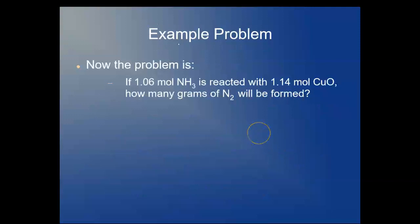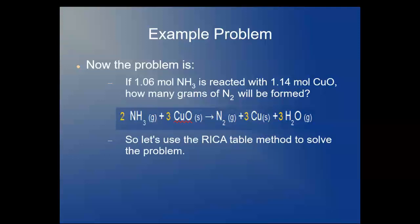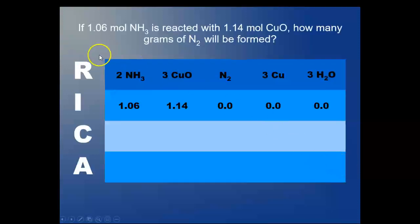Now the problem is a mole-mole problem. If you react 1.06 moles of ammonia with 1.14 of copper oxide, how many grams of nitrogen will be formed? So here's your balanced chemical equation, and let's use the RECA table method to solve the problem. Here's your reaction on top, and you notice we have the coefficients with them, so we don't lose track of this. There is no nitrogen, copper, or water to begin with, so we start off with only reactant.